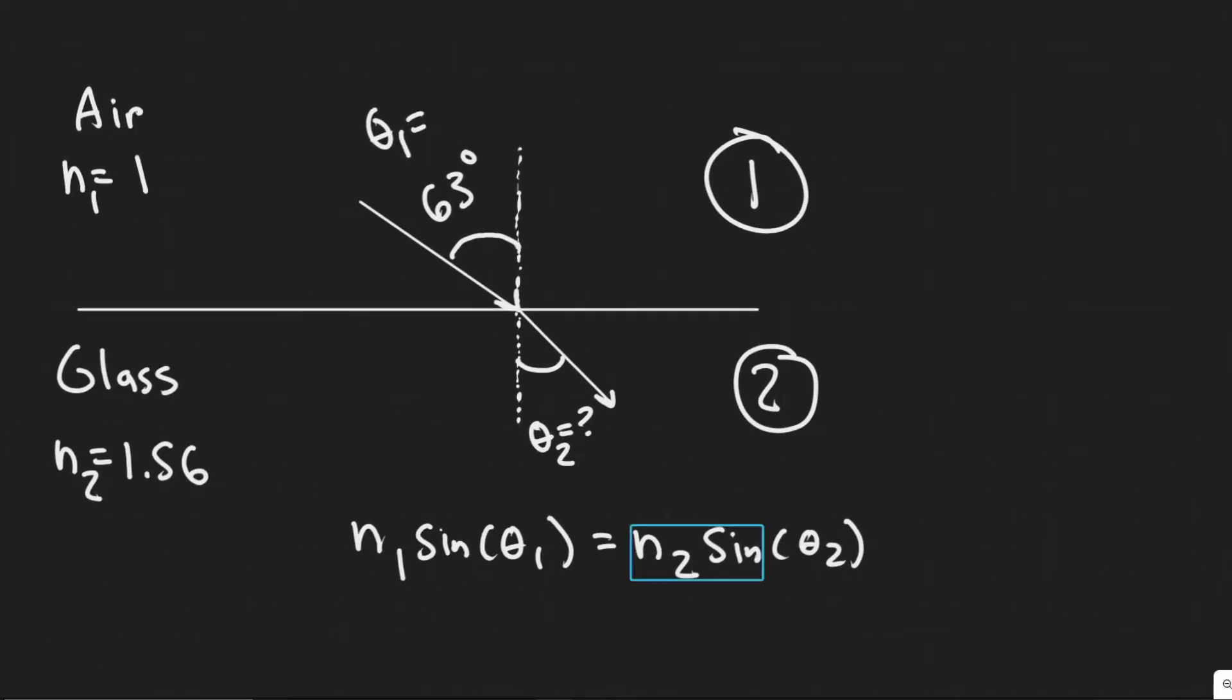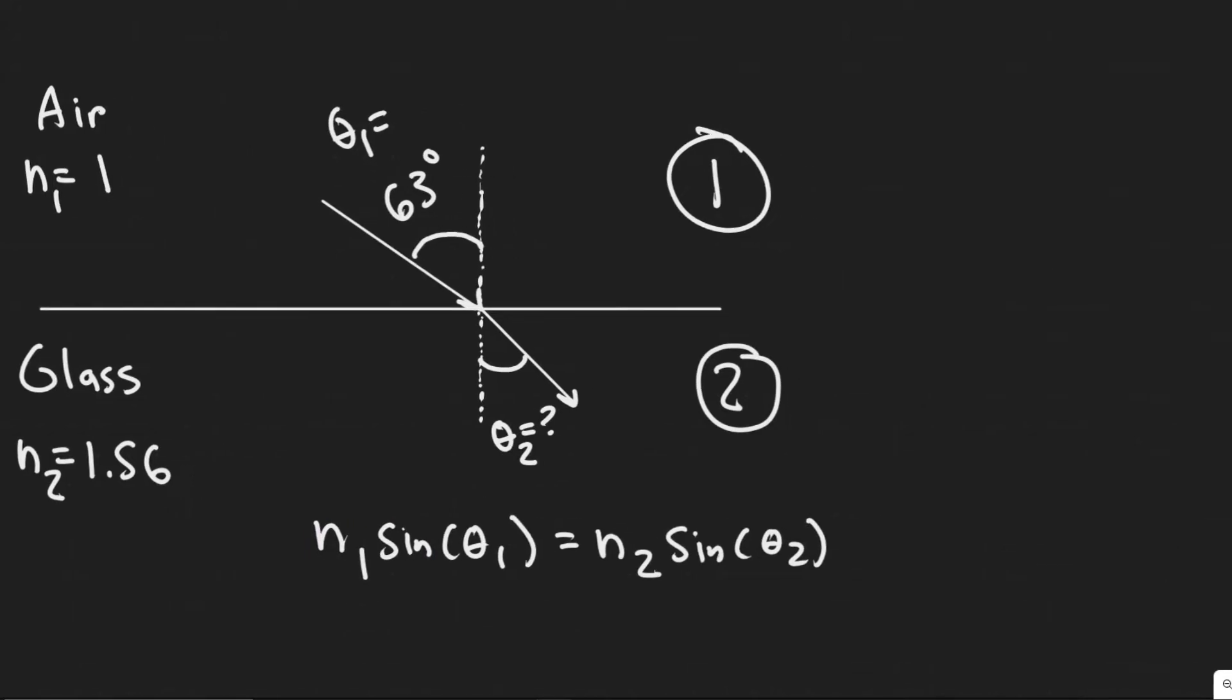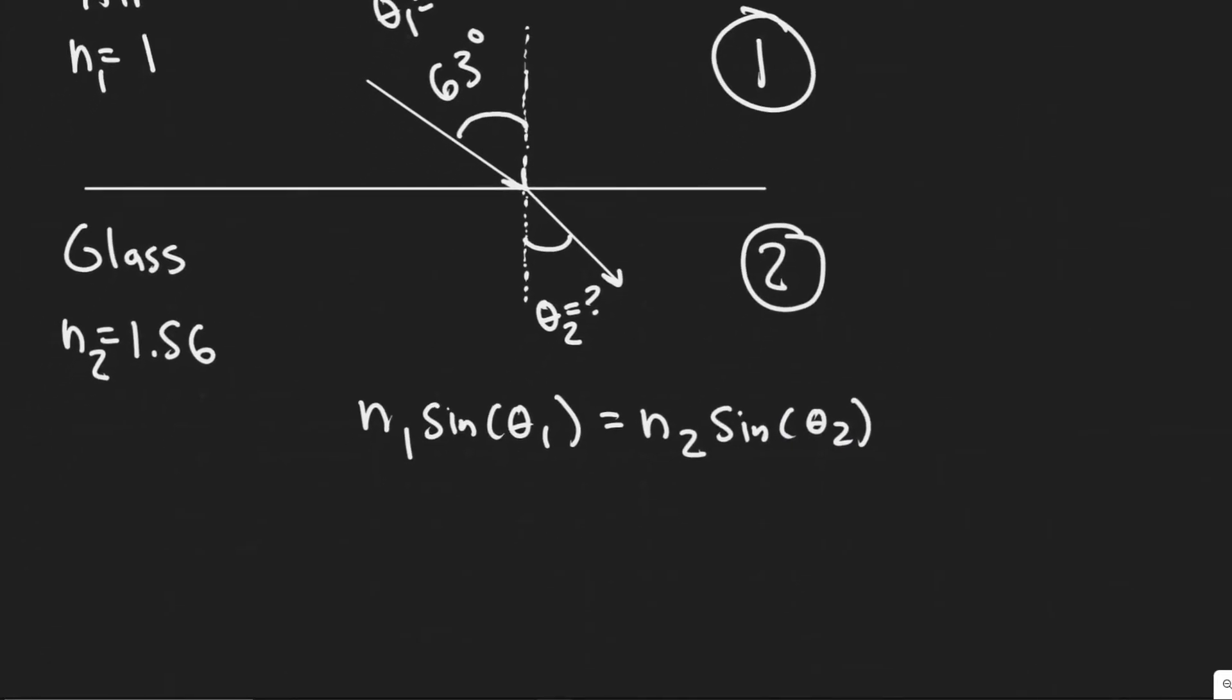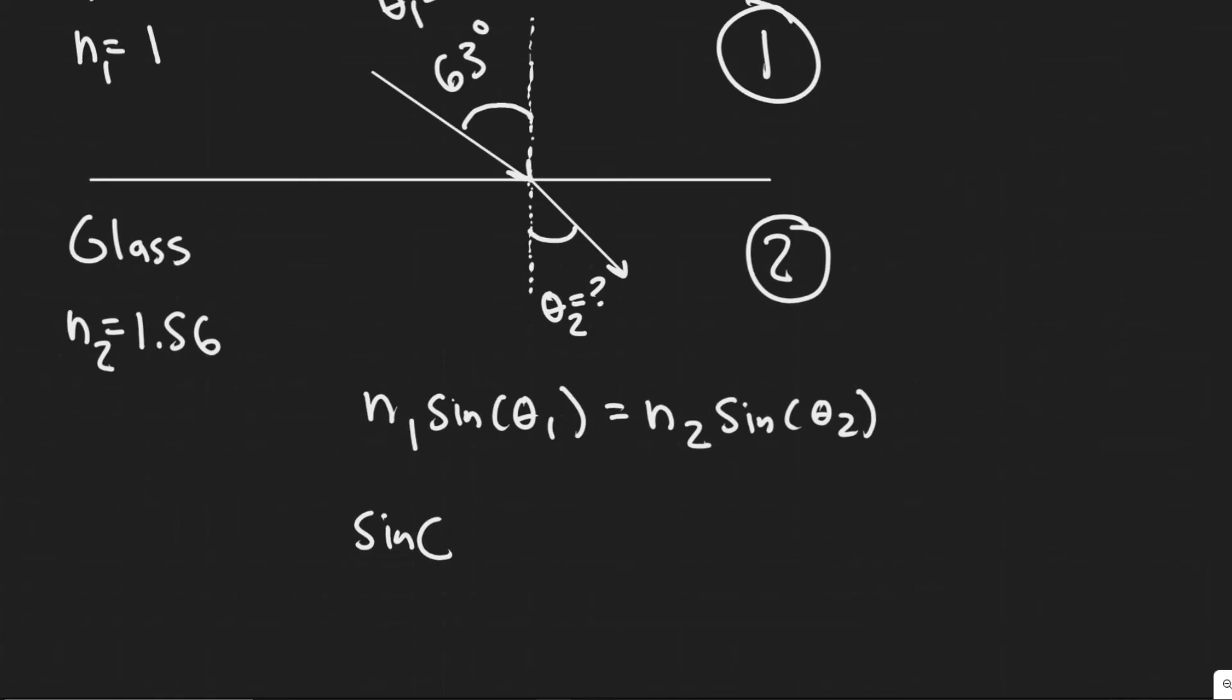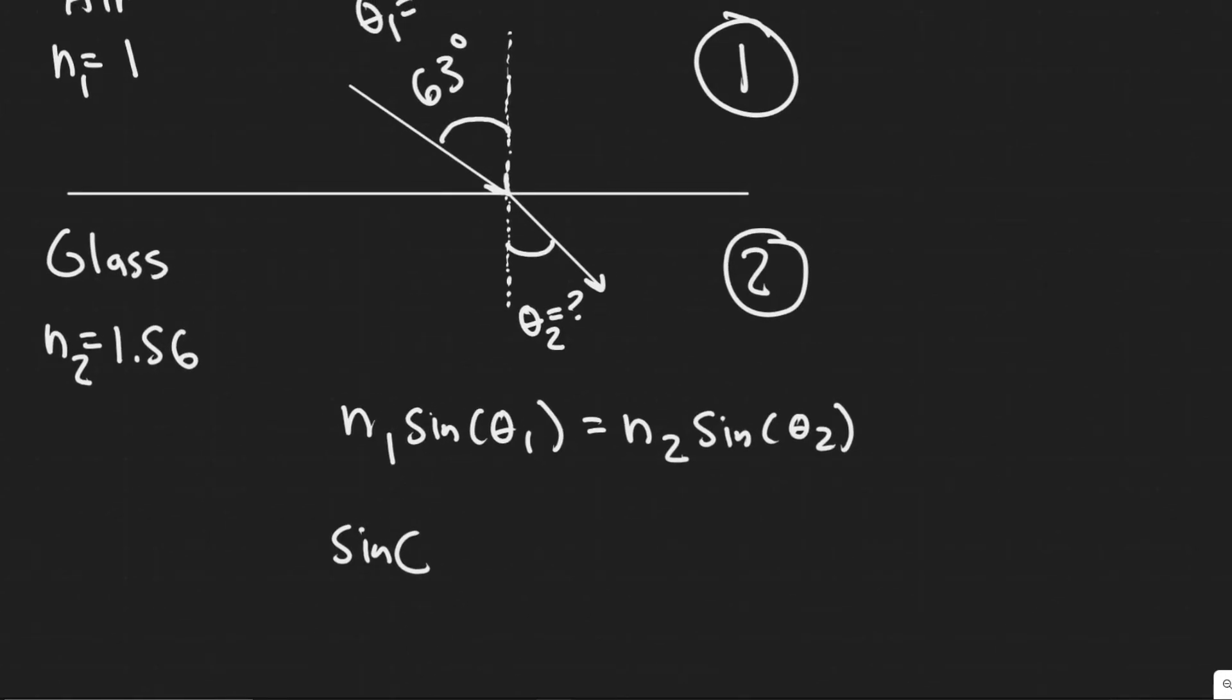Notice we have n1, we have theta 1, and we have n2. So to solve for our angle of refraction, theta 2, it's just a matter of plugging in and solving. We have 1 times the sine of theta. I'm not going to write the 1 because 1 times anything is just that thing. So we have the sine of 63 degrees equals 1.56 times the sine of theta 2.